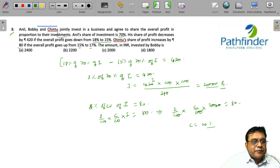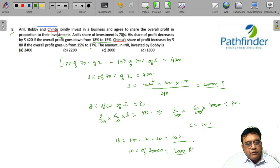Obviously, 70% was invested by Anil. Chintu has invested 20%. So, Bobby must have invested 100 minus 70 minus 20 that is 10%. And what is 10% of 20,000? 10% of 20,000 must be equal to 2,000 rupees.